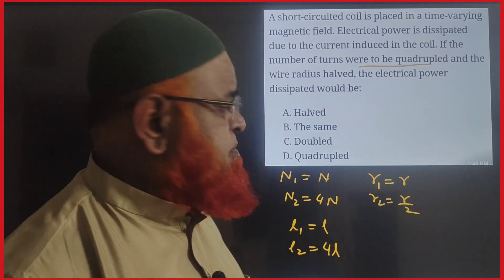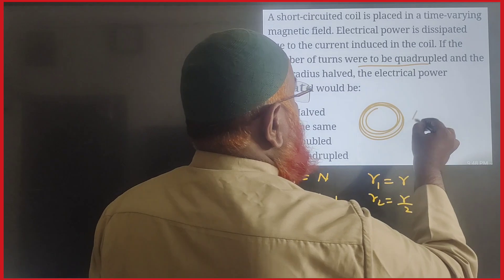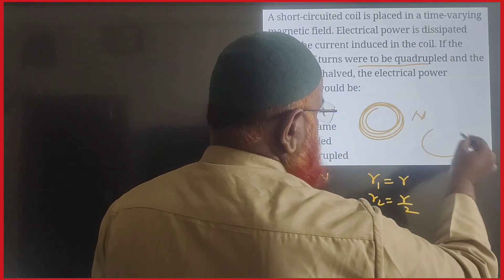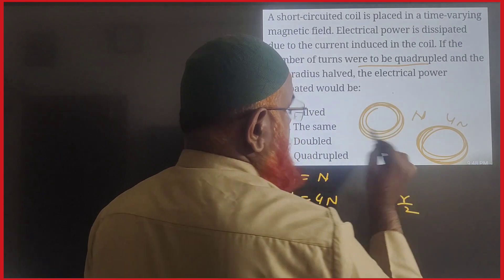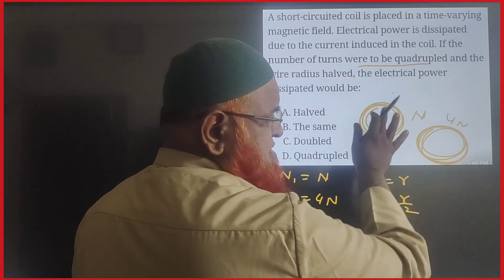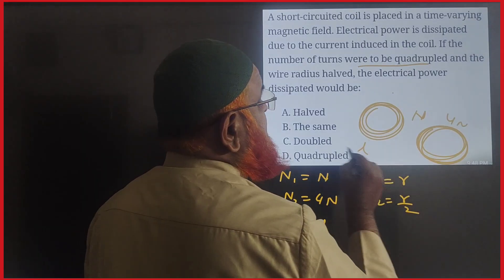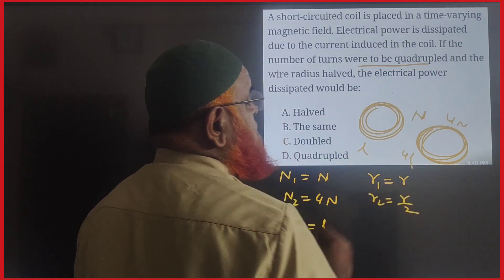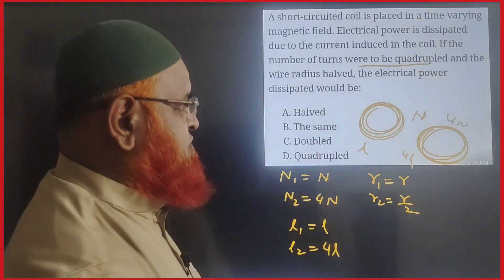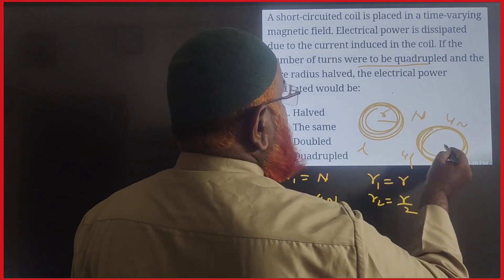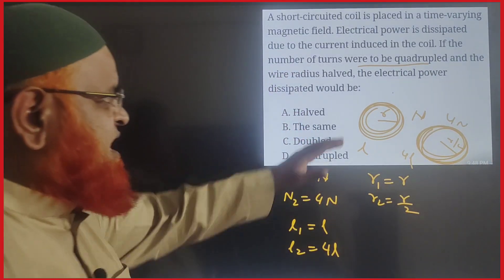Number of turns are quadrupled means, for example, take one coil having n turns. Quadrupled means this is four times the previous coil, so this coil has n turns and that coil has 4n turns. That means if this has length l, this has length four times the previous length. And it is also said that if the radius of the first one is r, the radius of the second one is going to be half of the previous one, r/2.